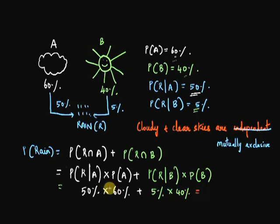50% into 60% will be half of 60% which is 30% or 0.3. And 5% into 40% will be 2% or 0.02. So this sums up to 0.32 or 32%. So there is a 32% chance that our cricket match will be washed out.